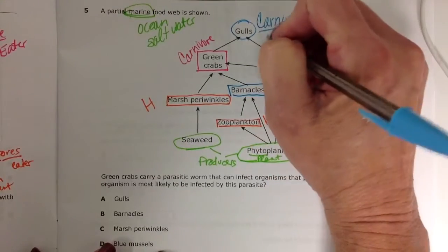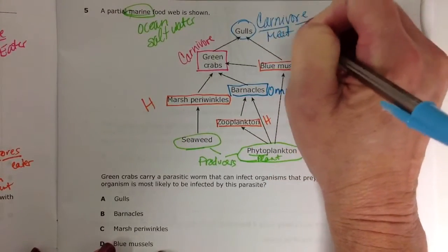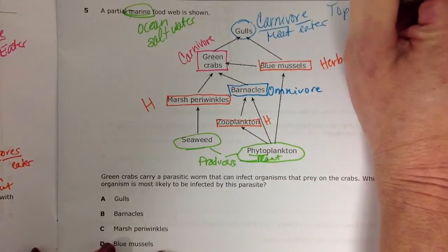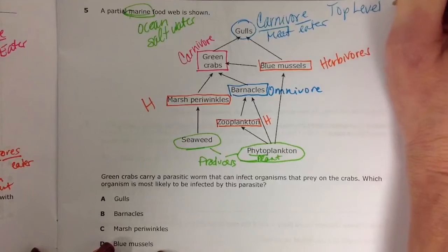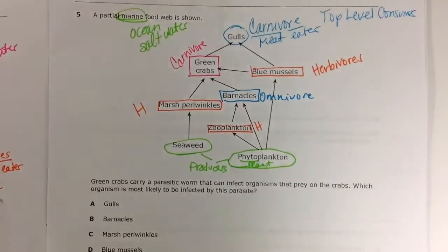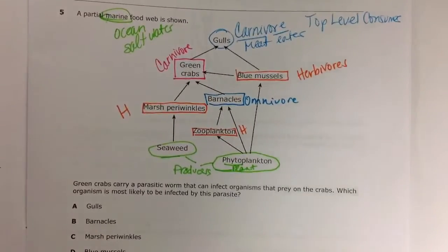Carnivore, meat eater. But it's going to be a top level consumer as well. Because according to this food web, it's all the way at the top of the food chains, all of the various food chains.